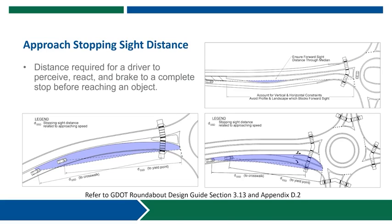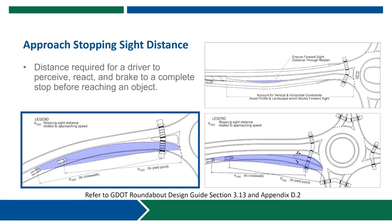Approach stopping sight distance considers the design speed of the roadway upstream of the intersection and evaluates the distance required for a driver traveling at that speed to perceive, react, and then brake to a complete stop. The stopping sight distance we're considering is the sight distance to both the crosswalk on the approach as well as to the yield line, to make sure drivers are able to adequately see and react to both of those elements of the design and be able to come to a complete stop prior to entry if necessary.